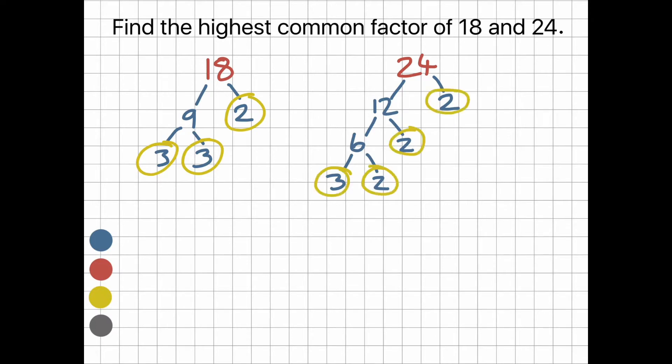If we multiply these prime numbers, we get the number we started with. 3 times 3 times 2 is 18. 3 times 2 times 2 times 2 is 24.